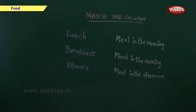Match the column. On one side is written the name of the meal, and on the other side is written the time at which we eat them. You have to match them.